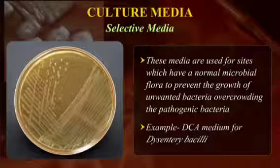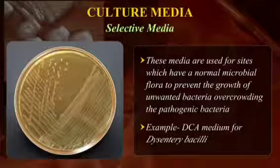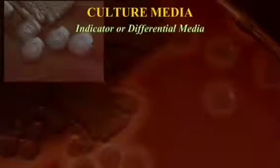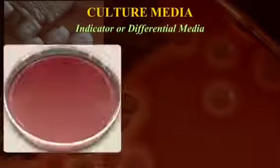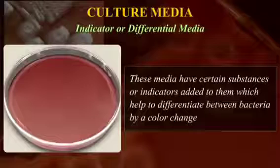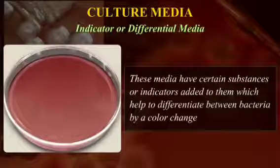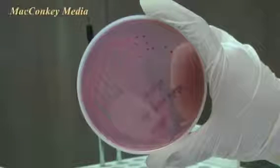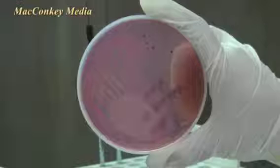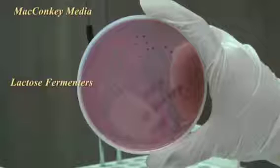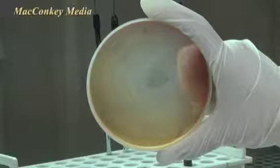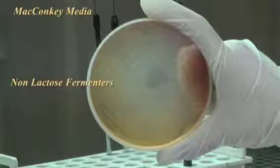An example is DCA medium for dysentery bacilli. Indicator or differential media: These media have certain substances or indicators added to them which help to differentiate between bacteria, usually by a colour change. An example is MacConkey's medium, which produces red-coloured colonies of bacteria which are able to ferment the carbohydrate present in the medium. In contrast, bacteria which do not ferment carbohydrate produce colourless colonies.